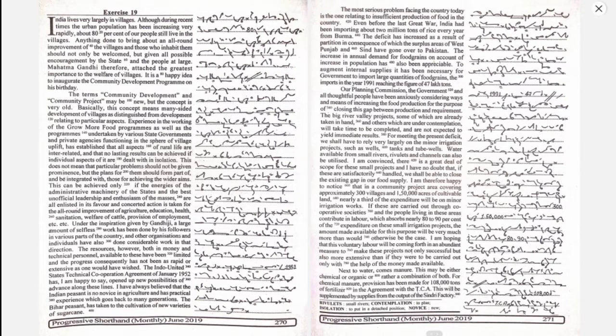For meeting the present deficit, we shall have to rely very largely on the minor irrigation projects, such as wells, tanks and tube wells. Water available from small rivers, rivulets and channels can also be utilized.